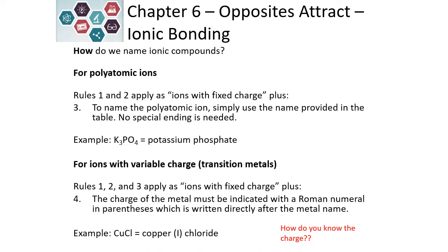If there is a polyatomic ion present — and polyatomic ions are groups of elements that are covalently bonded to each other but have an overall charge, and this charge does not change — we still name the polyatomic ion just using the name provided on the table. No special endings are needed. So an example: we have K3PO4. The PO4 is our polyatomic ion. We name it potassium phosphate. So the PO4 is the phosphate part of our name.